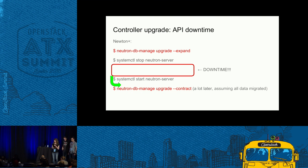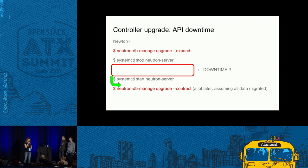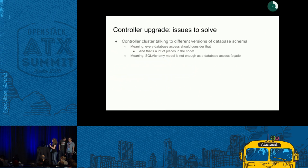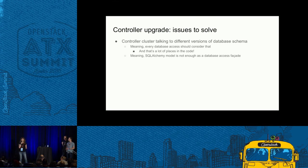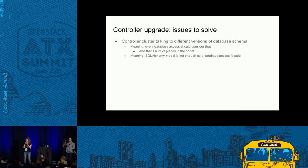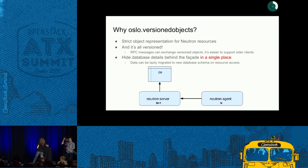So, as you might imagine, we have issues to solve for the upgrades. We have some downtime in the API, and another problem is that even if we have a cluster of databases, we need to have the same schema — we cannot handle different database instances using a different schema for the data. We were trying to find a solution, and that's when we met Oslo Versioned Objects. Let me explain why we decided to adopt this library.